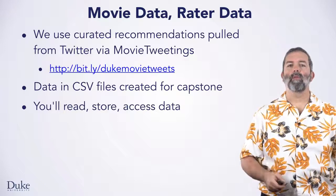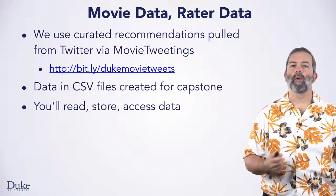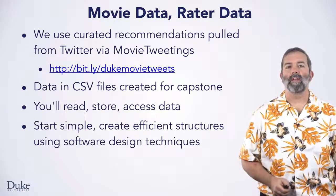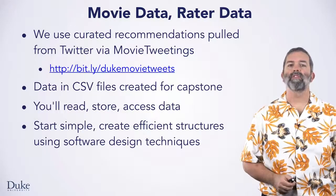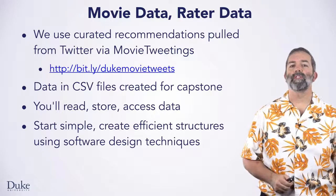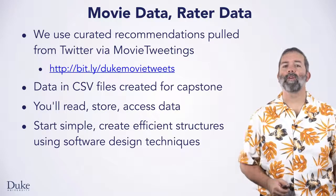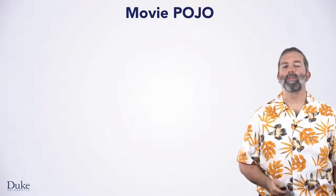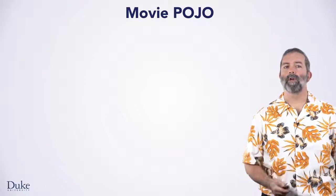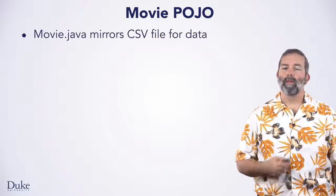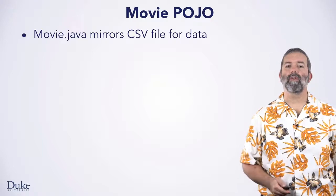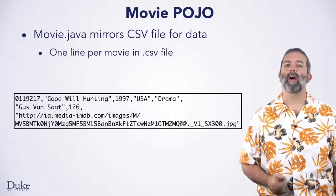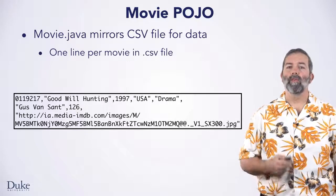You'll read the data and store the rating movie data in collections your program will access to create recommendations. You'll start with simple storage techniques and as you create more sophisticated recommendations, you'll use more efficient data structures using the software design principles you've learned in this specialization. You'll use plain old Java object, or POJO, to store the movie data. The movie.java class mirrors the CSV file storing the movie data.